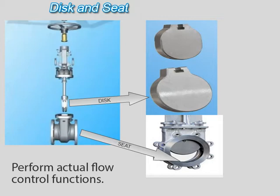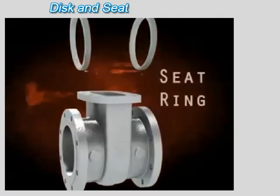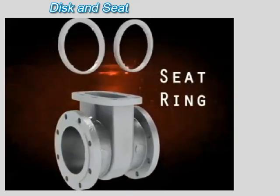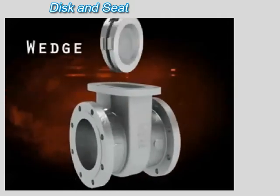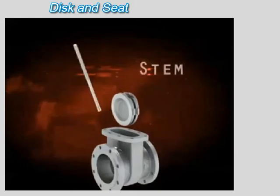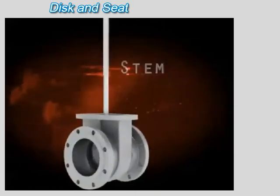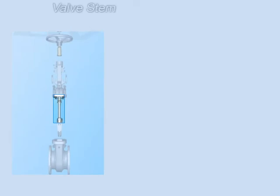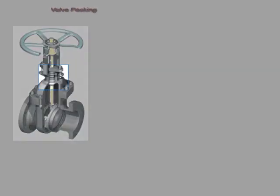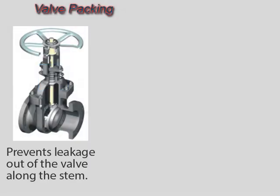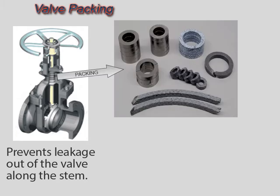Most valves are named in part according to the design of their disc. The stem is the portion of the valve trim that positions the disc. Valve designs typically require stem packing or sealing to prevent leakage, so a fine or smooth surface finish on the stem in the area of the seal is necessary. Most valves use some sort of packing to prevent leakage from the space between the stem and the bonnet. Packing is commonly a fibrous material such as flax, or another compound such as Teflon or graphite, that forms a seal between the internal parts of a valve and the outside where the stem extends through the body.